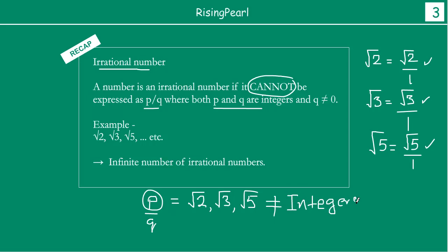You know what integers are — we have seen that in episode 1 and episode 2. So if we write square root 2, 3, 5 in this form, we notice that the numerator is not an integer. For a rational number, we need both p and q to be integers, where the number is expressed as p by q and q should not be 0. So we see that square root 2, square root 3, square root 5 — they are not integers, and because of this, we cannot say these are rational numbers.